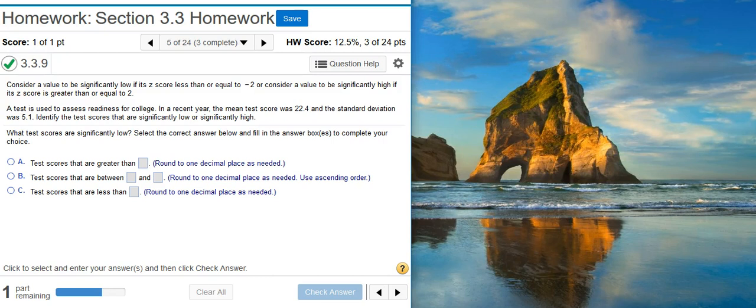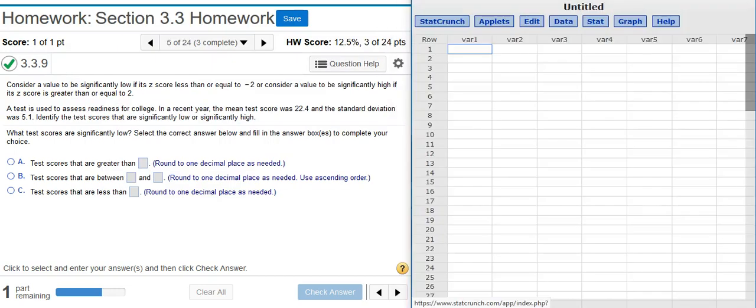This first part is asking us for the test scores that are significantly low. I could go old school and use the formula from the lecture to calculate with my calculator, just punch the numbers out to convert from a z-score to a real-world value. But I love the 21st century because it allows us to use technology like StatCrunch. I'm going to show you how easy this is in StatCrunch.